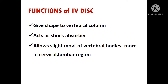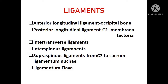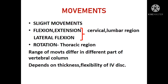The functions of the intervertebral disc: it gives shape to the vertebral column and acts as a shock absorber. It allows side movement of the vertebral bodies, more in the cervical and lumbar regions. The ligaments of the vertebral column include the anterior longitudinal ligament, extending up to the occipital bone, and the posterior longitudinal ligament, extending up to the level of C2. Above C2, it is called the membrana tectoria. Between the transverse processes is the intertransverse ligament, between spinous processes is the interspinous ligament, and the supraspinous ligament runs from C7 to sacrum. Above C7, the ligament is called the ligamentum nuchae. Adjacent laminae are connected by the ligamentum flava.